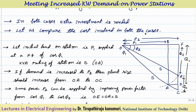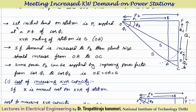That is why we are going to compare the cost involved in both cases. I have drawn the same diagram and represented the phasors. Let the initial load on the station be P1, supplied at a power factor of cos phi 1, and let the KVA rating of the station be S = OA. If the demand is increased from P1 to P2, it has to supply the same power at the same power factor, extending OA to intersect the vertical line from F at point C.